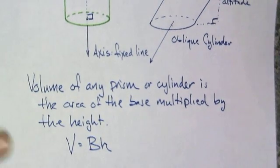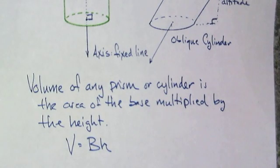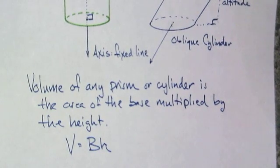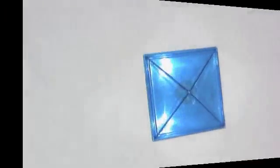So, anything that has two congruent bases, you can use this. And this is where we're just going to start. The volume of any prism or cylinder is the area of the base times the height. So, I have a couple examples.